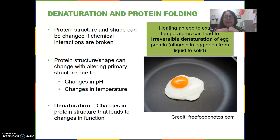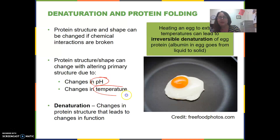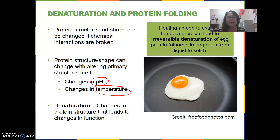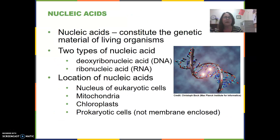Proteins can be denatured. Heating will denature a protein — when we cook an egg, which is primarily proteins and lipids, cooking it changes the protein structure. Changes in pH and temperature affect whether the protein functions. Most proteins in the body function at pH levels of around 7.3 or 7.4, but in the stomach the protein pepsin is only activated when the pH drops very low to 1 or 2. So pH and temperature are very important to the protein maintaining its shape and function.